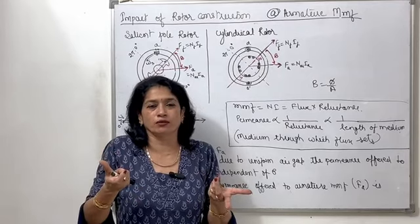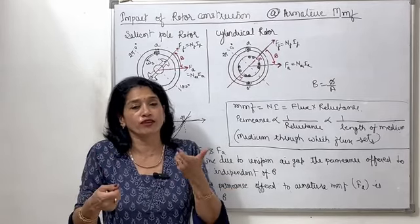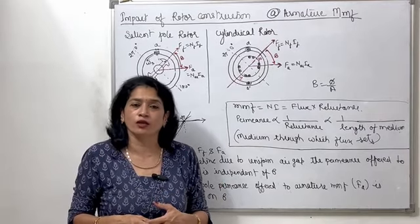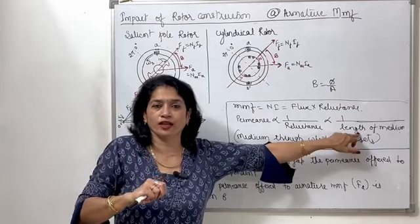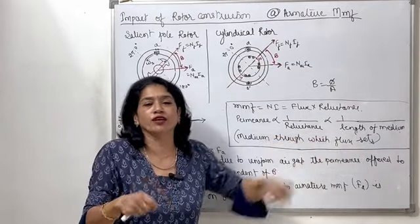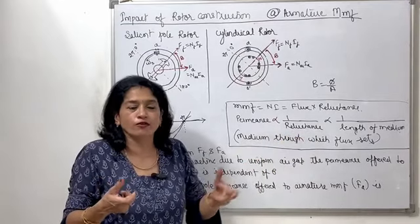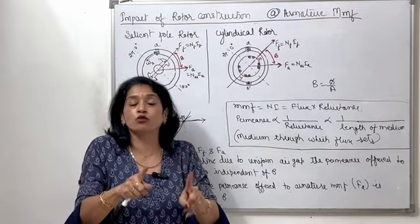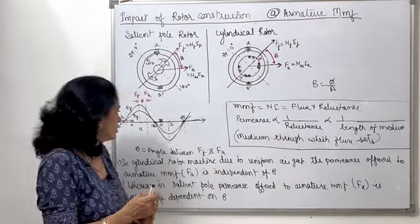Reluctance is proportional to the length of the magnetic material and the length of the air gap through which the flux must pass. If the air gap length is small, reluctance is less; if the air gap length is large, reluctance is large. And if reluctance is large, permeance is small, so the quantity of flux set will be less.